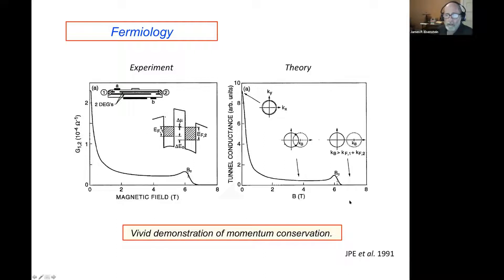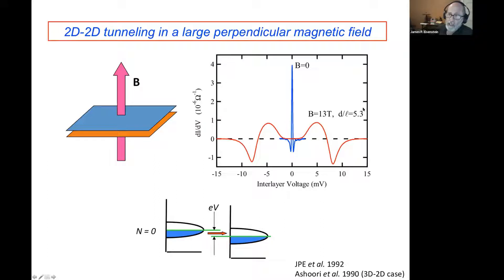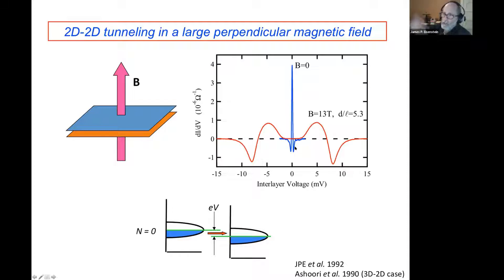This rather vividly verified that canonical momentum conservation was accurately obtained in these experiments. Now let's go back: we're interested mostly today in what happens in high perpendicular magnetic fields. We have our bilayer system, now with a magnetic field perpendicular. The blue trace shows that same resonance at zero voltage — same electron densities, very sharp. Then we put on a big magnetic field, driving the system into the quantum Hall regime near half-filling of the lowest Landau level.